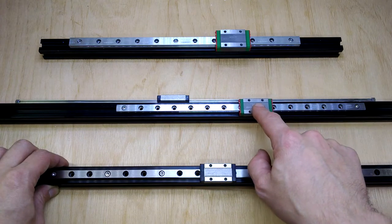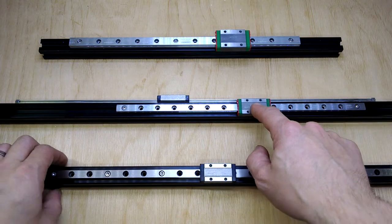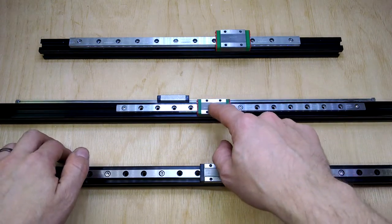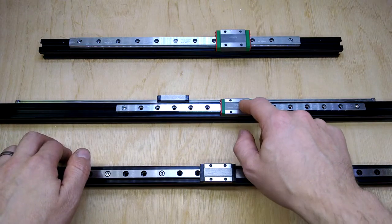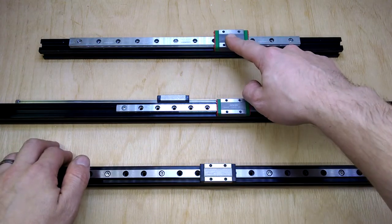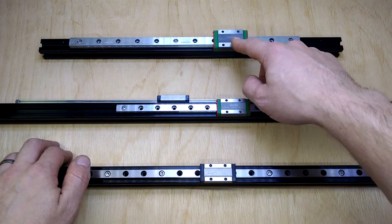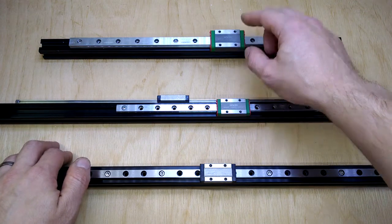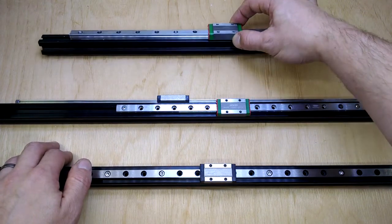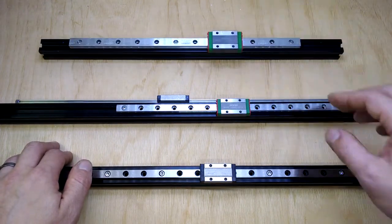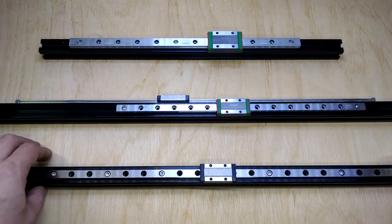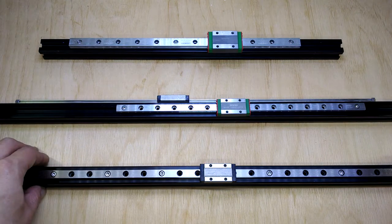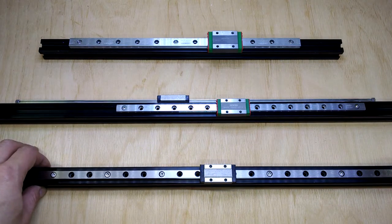We also got the Hiwin MGN9 linear rail and the long carriage for that. And now I've gone for the 12mm version of that because I was getting some deflection in the axis, twisting like that, which when I use that single rail for my X-gantry on the printer will lead to some defects in the print.